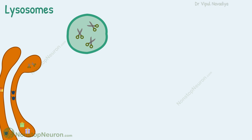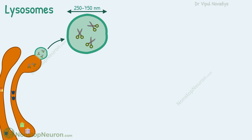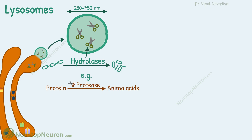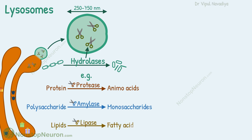Let's first see lysosomes in more detail. They are formed by breaking off from the Golgi apparatus and then spread throughout the cytoplasm. They are 250 to 750 nanometers in diameter. They contain up to 40 different types of hydrolase enzymes. Hydrolase enzymes basically break molecules down into two or more fragments.